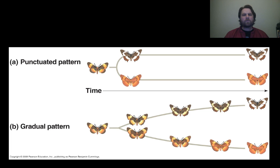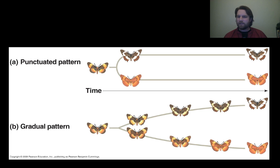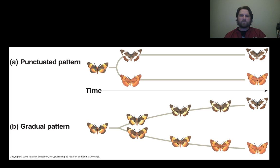Looking at these two patterns side by side: a punctuated pattern shows one butterfly that suddenly changes into two different species, and then nothing happens for a really long time. With the gradual pattern, you see the coloring slowly diverging until two new species emerge — it happens very, very gradually.